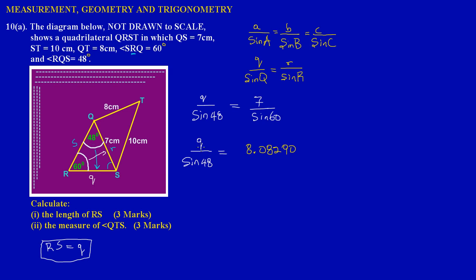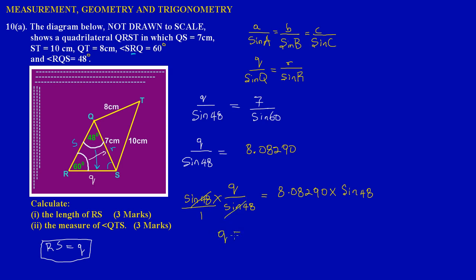Since we want to isolate little q, we need to multiply both sides by sine of 48 degrees. Little q over sine 48 equals 8.08290, so multiplying both sides by sine 48 — the sine 48 cancels on the left — leaving little q equal to sine(48°) multiplied by 8.08290.